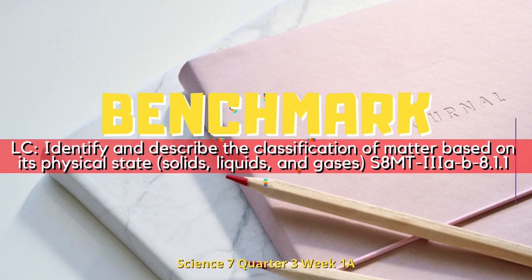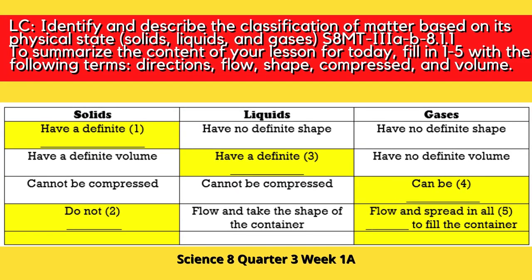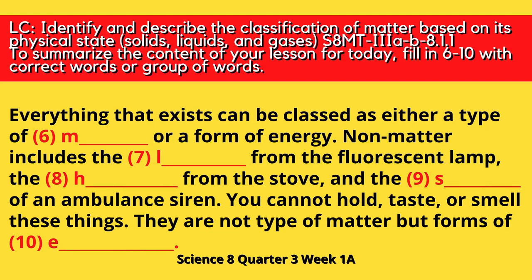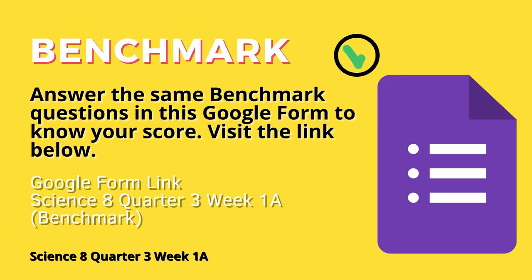Benchmark: Learning competency — Identify and describe the classification of matter based on its physical state: solids, liquids, and gases. S8MT-3A-B-8.1.1. To summarize the content of your lesson for today, fill in 1 to 5 with the following terms: Directions, Flow, Shape, Compressed, and Volume. Fill in 6 to 10 with the correct word or group of words: Everything that exists can be classed as either a type of Matter or a form of energy. Non-matter includes the Light from the fluorescent lamp, the Heat from the stone, and the Sound of an ambulance siren. You cannot hold, taste, or smell these things. They are not a type of matter but forms of energy. Answer the same benchmark questions in this Google form to know your score.